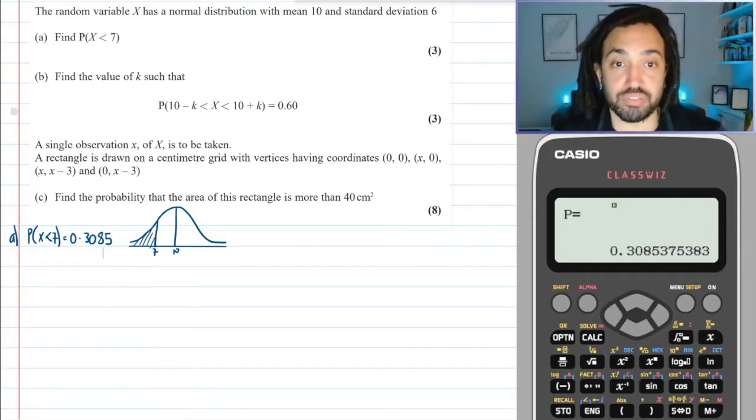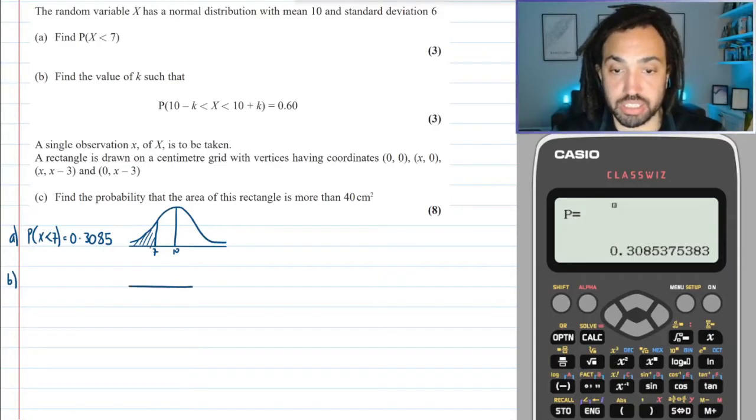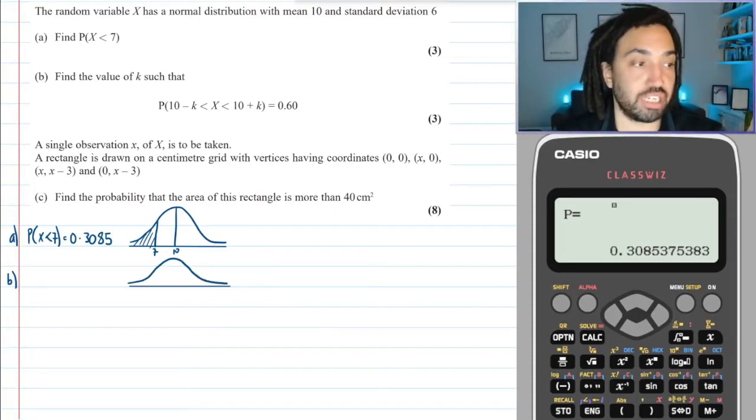Part (b) says find the value of k such that P(10 - k < X < 10 + k) = 0.60. I know a lot of people don't like statistical notation and get put off by it, but hopefully this question will show you that it shouldn't be that scary.